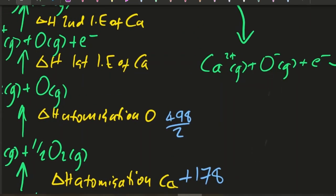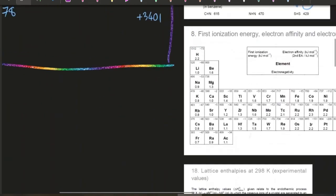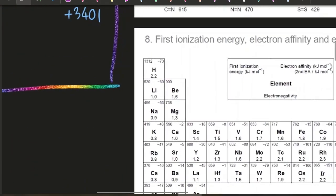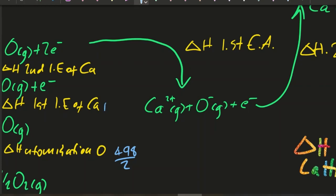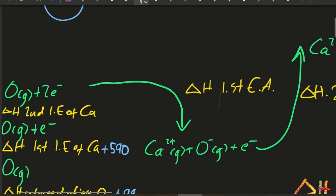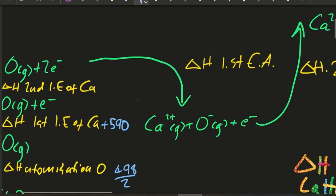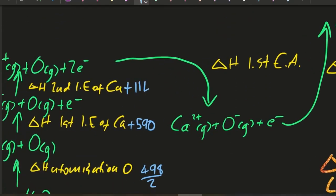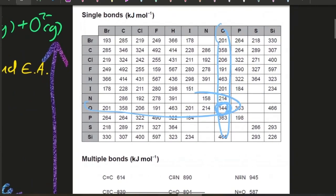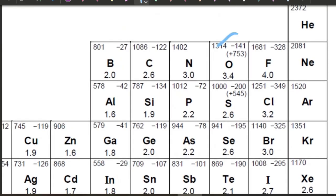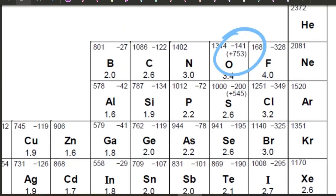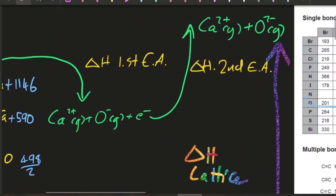The first ionization energy of calcium is +590 kJ/mol. The second ionization energy of calcium is given in the question: 1146 kJ/mol. The first electron affinity of oxygen: there's the first and the second — minus 141 and 753. So that's −141 and +753 kJ/mol.